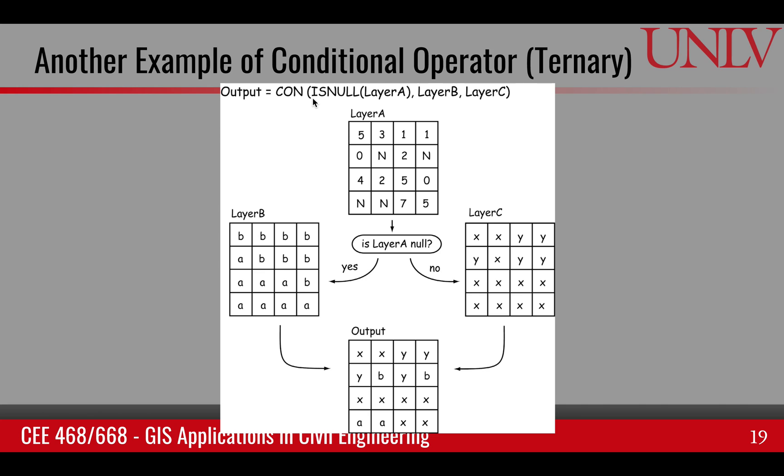Conditional operator has three inputs. The first one is layer A, on which isNull is applied. The other ones are layer B and layer C. So if the output of isNull on layer A is true, then we will choose layer B. If it's false, we'll choose layer C.